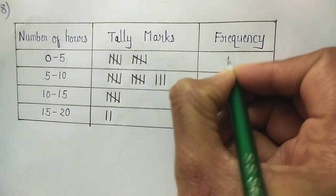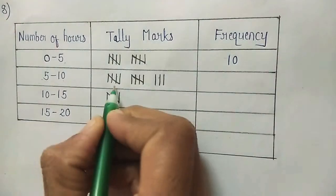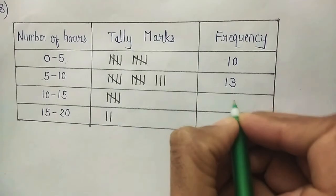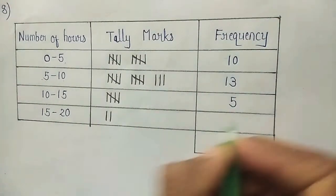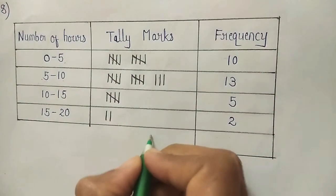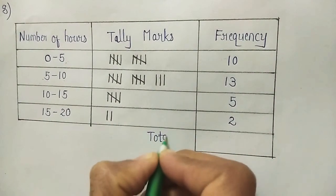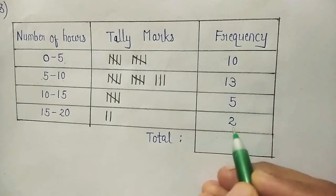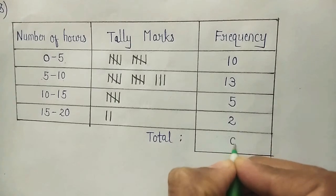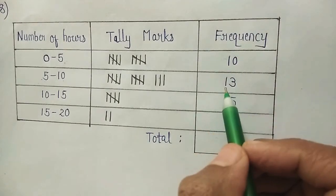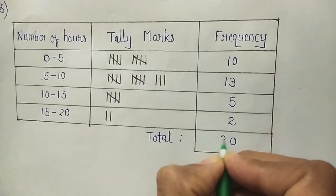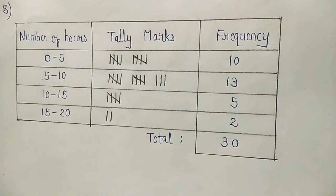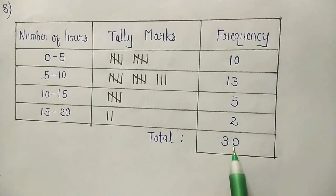Counting the telemarks: 5 plus 5 is 10 for the first class. 5 plus 5 plus 3 is 13 for the second class. This gives 5 and 2 for the remaining classes. Total: 2 plus 5 is 7, plus 3 is 10, then 0, then 1 plus 1 is 2, plus 1 is 3 — giving a total of 30. In the question it is given that there are 30 children, so here also we get total 30.